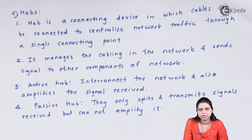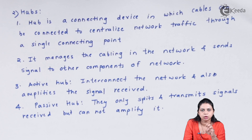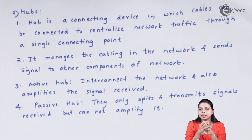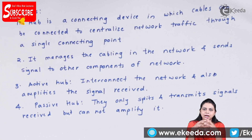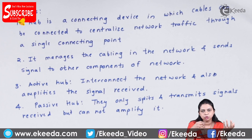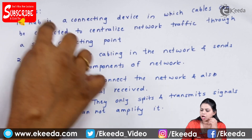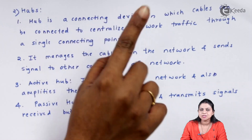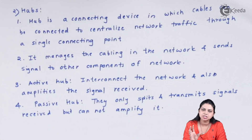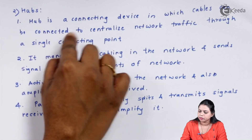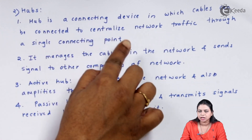The next device is called a hub. In star topology we have already discussed the hub. Hub centralizes the network — nodes in a star topology don't connect to each other directly; they connect via the hub. Whenever there is a need to send or receive a message, they send it to the hub, and the hub routes the data to the appropriate destination. Hub is a connecting device in which cables are connected to centralize network traffic through a single connecting point.